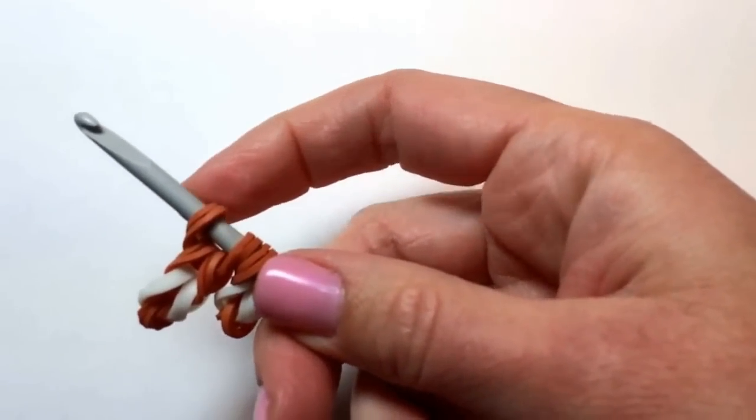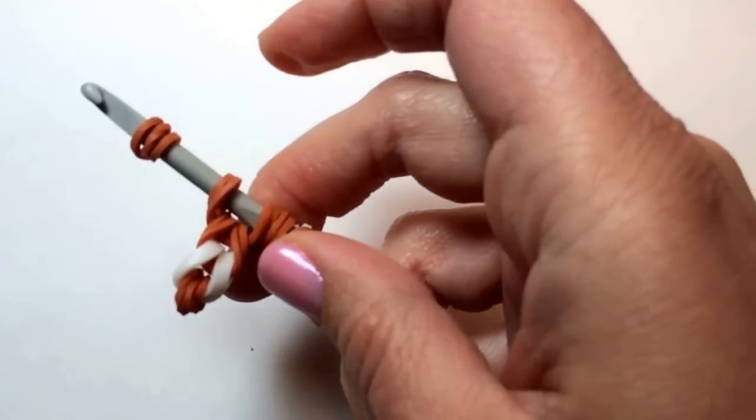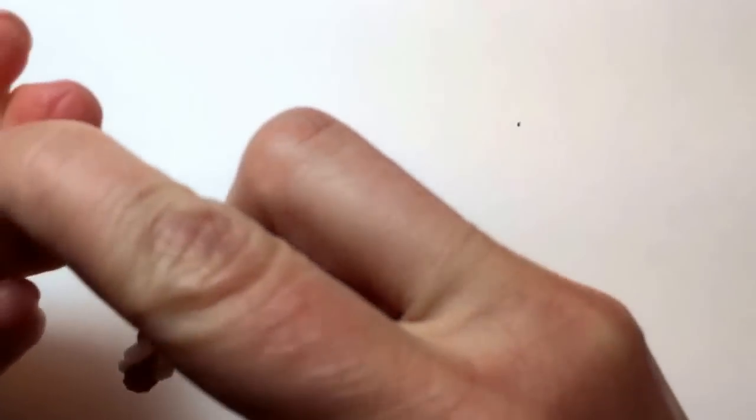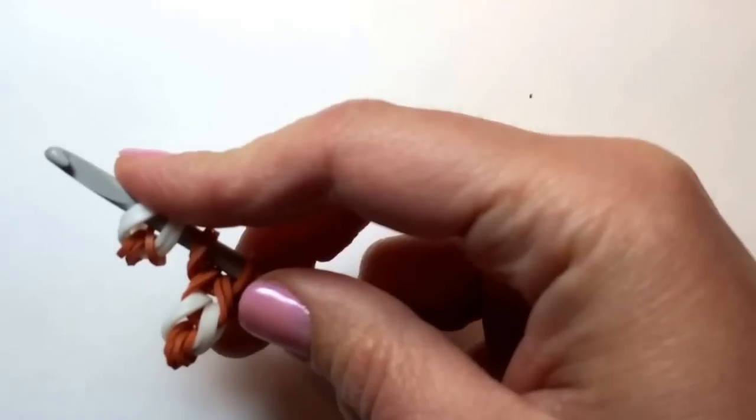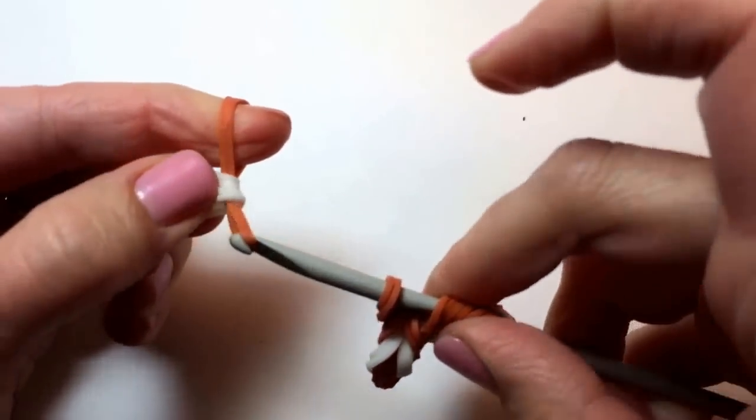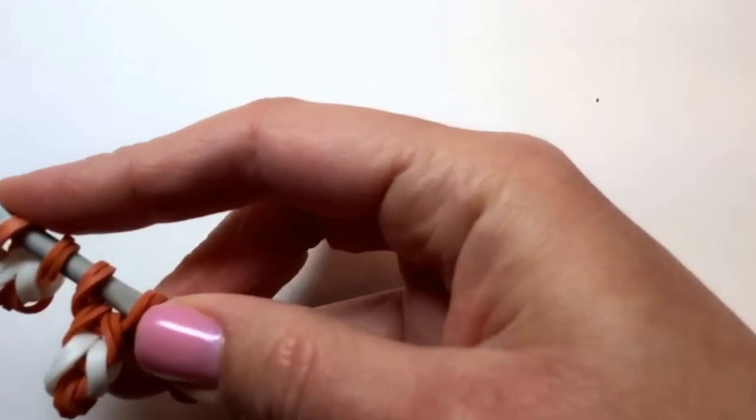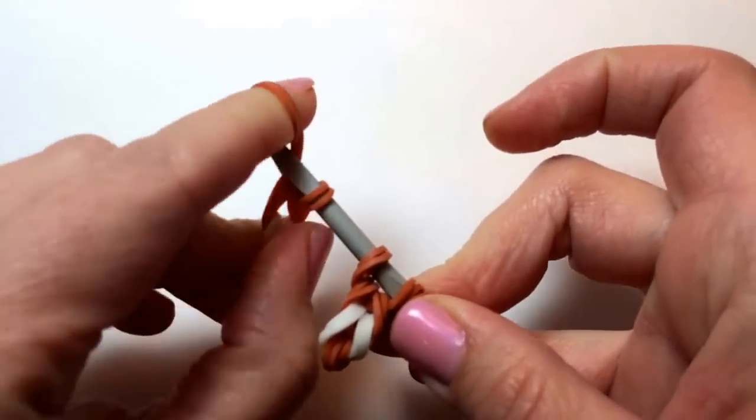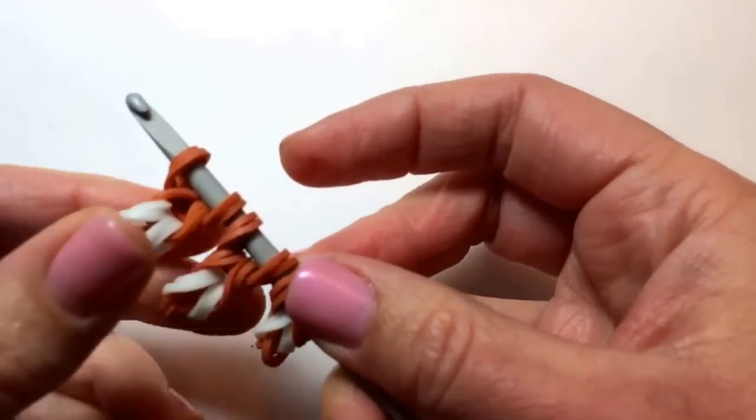We're going to make the second leg. One, two, three times around. Slide it to the middle of the white. And then two brown at a time. Once. And again.